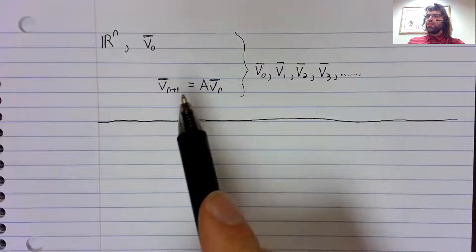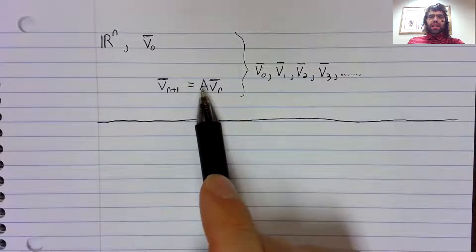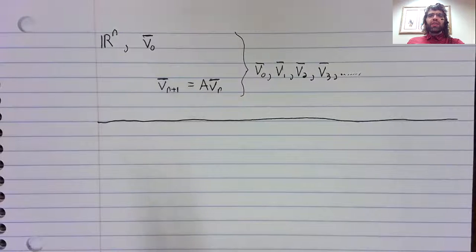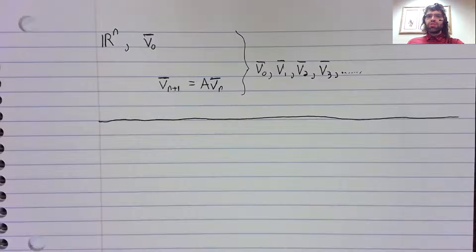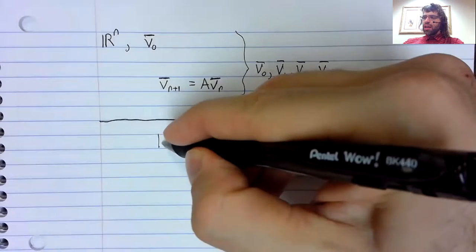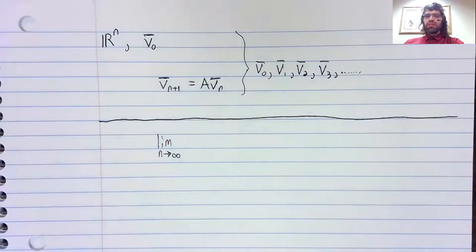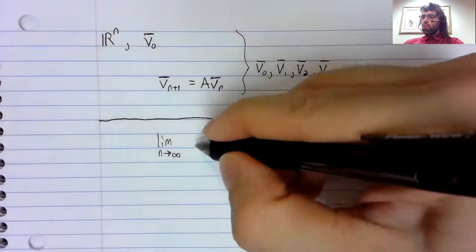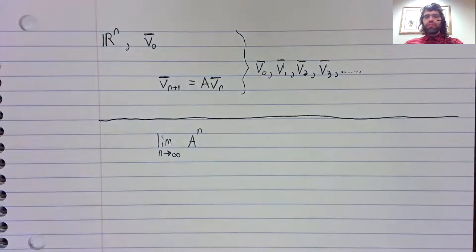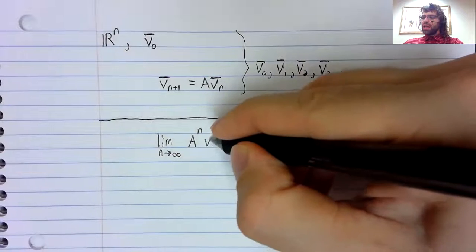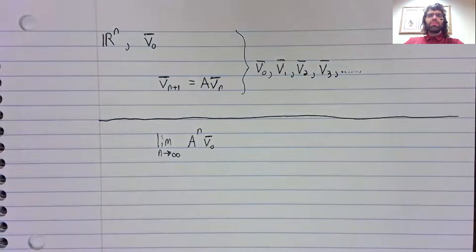If this matrix A has real eigenvalues, we can use eigenvalues and eigenvectors to see what happens as n goes to infinity. Let's state that as our goal: to compute the limit as n goes to infinity of A^n times V_0.